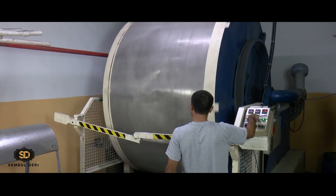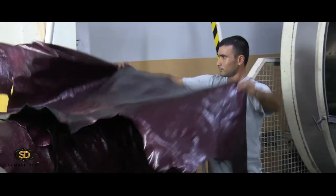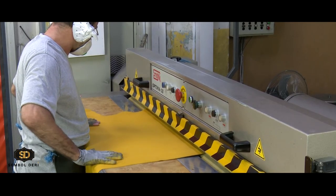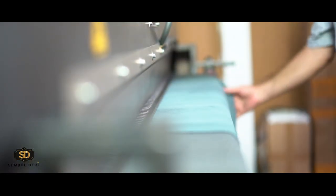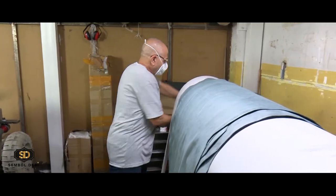In addition, on vegetable skin produced by using environmentally sensitive chemicals, Sembol Leather continues its R&D activities and aims to represent Turkey in the international market in this field. Sembol Leather continues its activities with this consciousness.